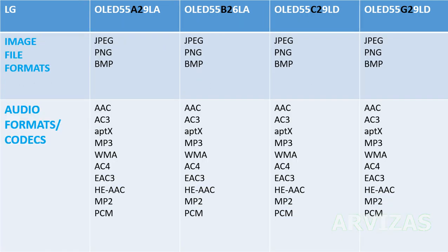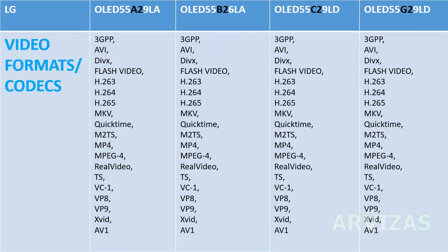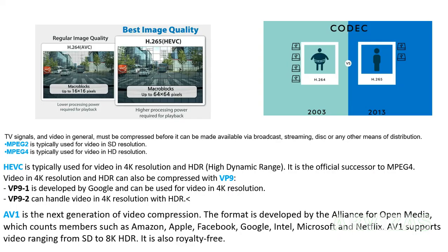Image file formats are the same for all: JPG, PNG, BMP. Audio formats and codecs include AAC, aptX, MP3, FLAC, AAC, AC3, HE-AAC, MP2, and PCM. Video formats are also all the same — you can see the list on screen. MPEG-2 is SD resolution, MPEG-4 is HD resolution, and AV1 is next-generation video compression developed for internet streaming, supporting video from SD up to 8K.